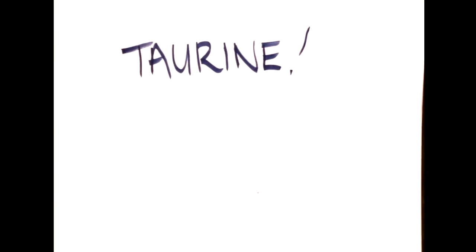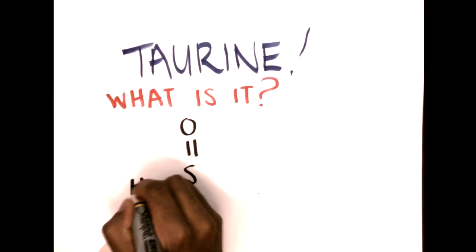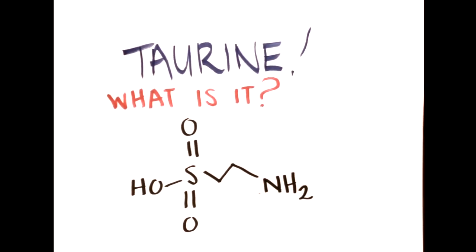Taurine, what is it? Taurine is a derivative of an amino acid. This means you can get it from food sources, as well it can be made in the body from other amino acids.